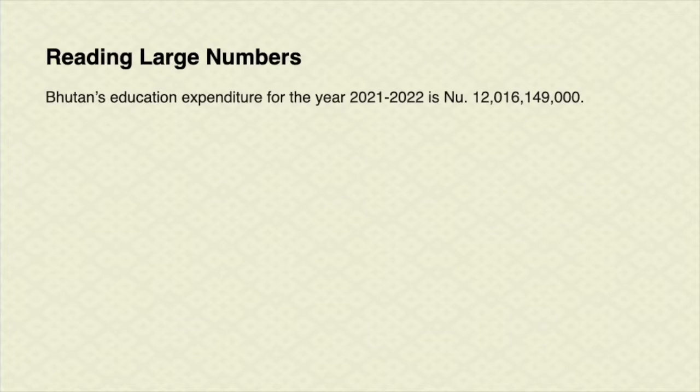Now let me give an example to have a better understanding of how to read the large numbers. The education expenditure for the financial year 2021 to 2022 is Nu. 12 billion 16 million 149,000. How do you read such big numbers?